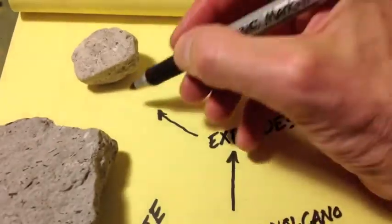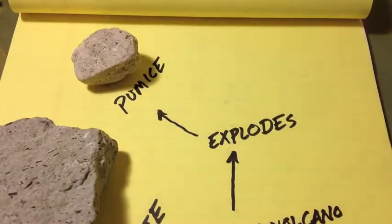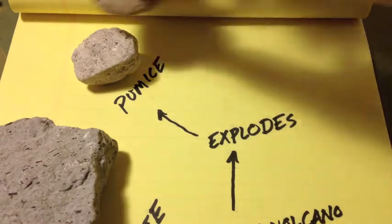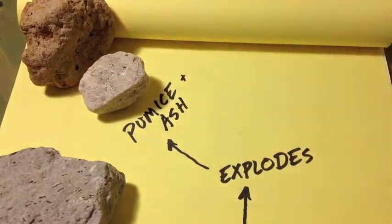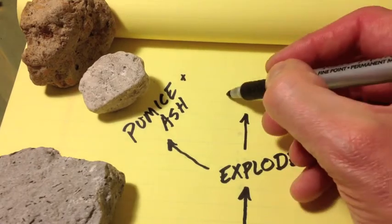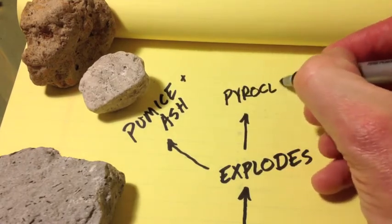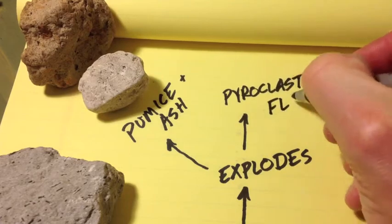The explosions of that magma create the pumice and ash, which makes tuff. Pyroclastic flows are when the ash flows downhill.